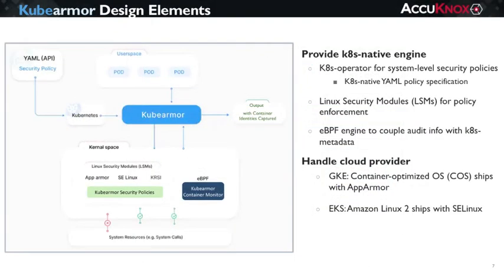Just to briefly touch on design elements, KubeArmor is a Kubernetes-native engine for deploying system-level security policies for containers. You express the policies using a YAML policy specification, which in turn gets translated into the corresponding AppArmor or SELinux specification automatically by KubeArmor, depending on the deployment structure of the container. In the context of multi-cloud planning, GKE uses a container-optimized OS and ships by default with AppArmor, while EKS, Amazon's Elastic Kubernetes Service, ships by default with SELinux. So with KubeArmor, the administrator doesn't have to understand the particulars of AppArmor and SELinux, but can use KubeArmor to express system-level controls using the Kubernetes-native YAML spec — it's GKE and EKS ready. In short, you get the full power that LSMs provide, while the LSM deployment complexities are essentially handled automatically.